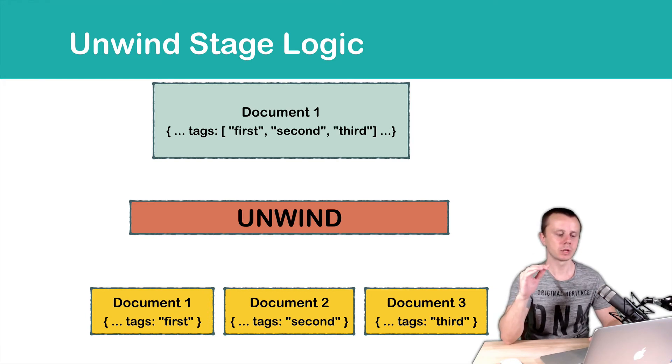And let's suppose that we pass this document to the Unwind stage. And we will unwind by tags field name. At the output of this operation, we will get three documents.